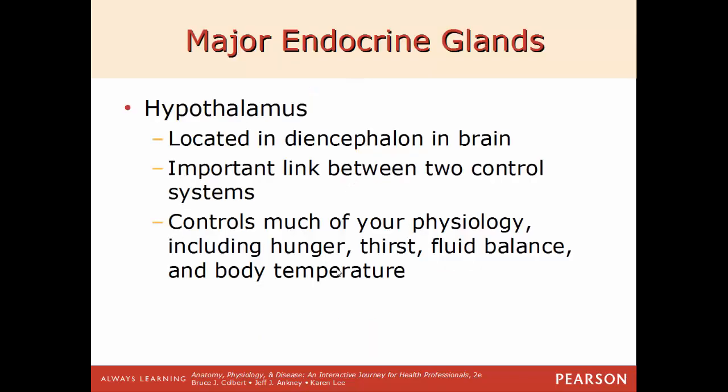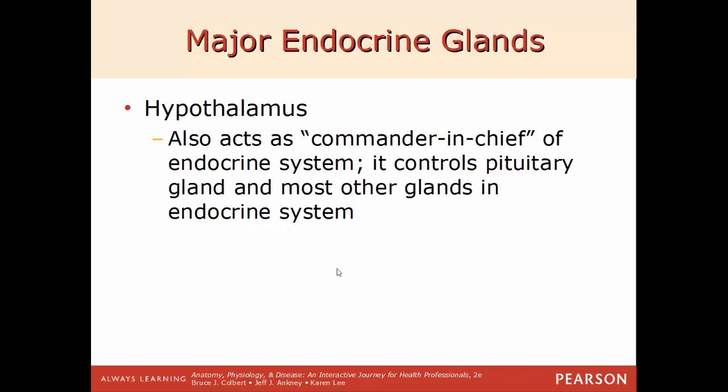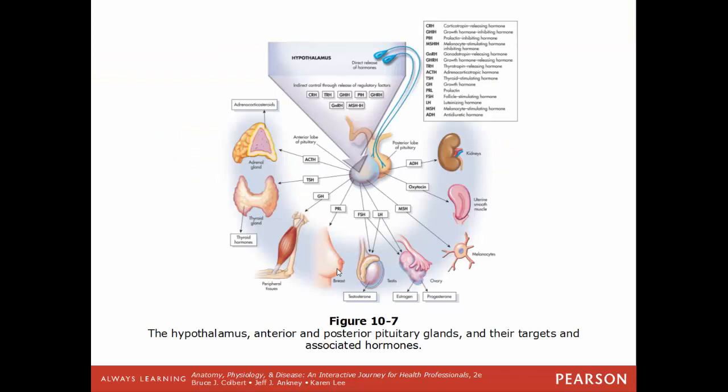The first major endocrine gland is the hypothalamus, located in the diencephalon of the brain. It is a very important link between the nervous system and the endocrine system, controlling much of your physiology including hunger and thirst, fluid balance, and body temperature. It is known as the commander-in-chief of the endocrine system. Even though the pituitary is called the master gland, the hypothalamus controls the pituitary. There is a quick overview of all the hormones the hypothalamus and pituitary control, including ACTH, TSH, growth hormone, prolactin, FSH, LH, MSH, oxytocin, and ADH.